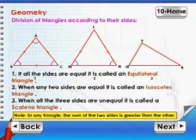When any two sides are equal, it is called an isosceles triangle. When all three sides are unequal, it is called a scalene triangle.